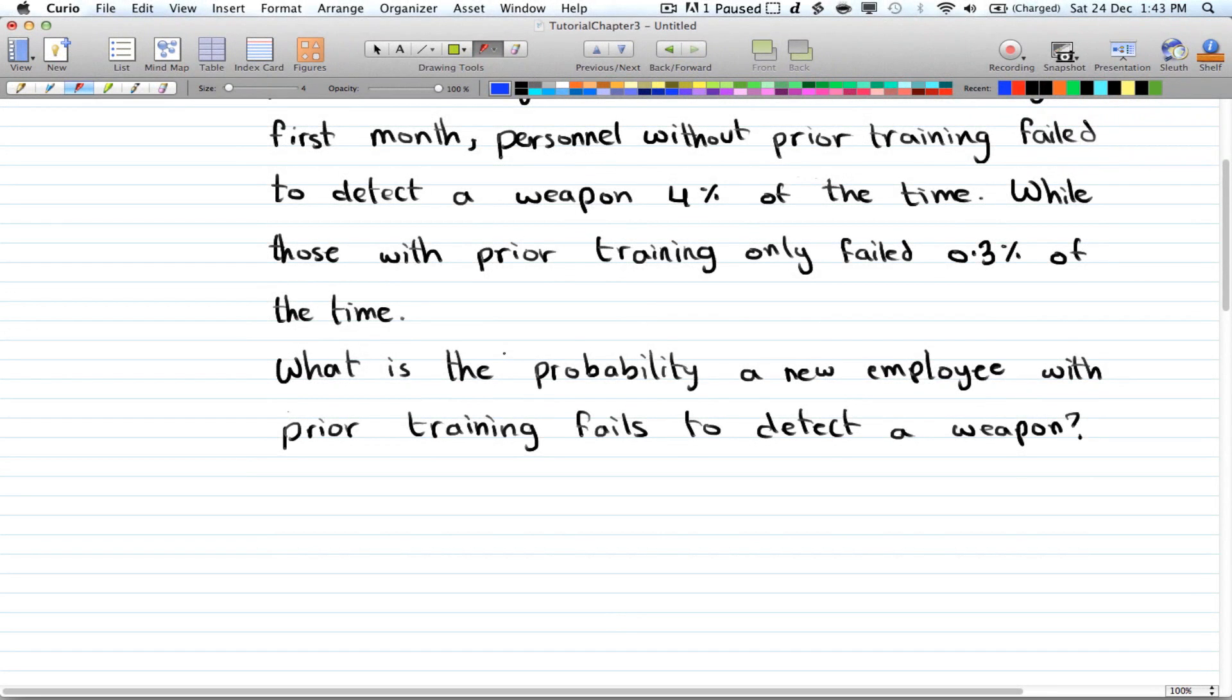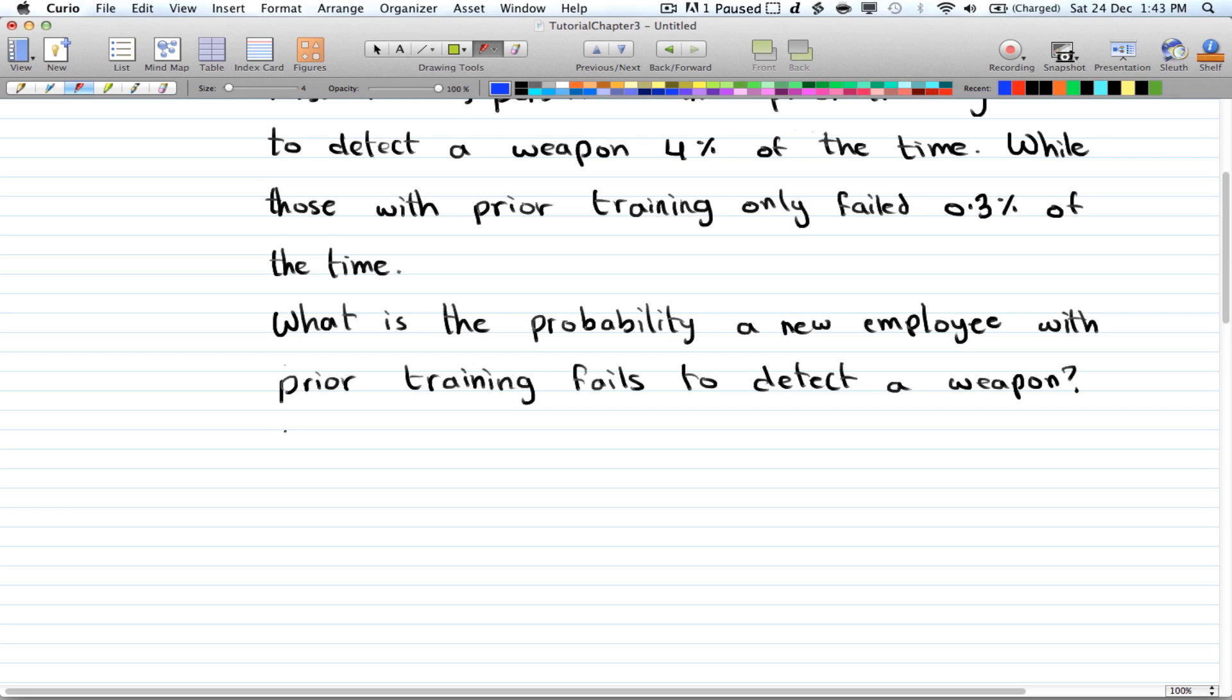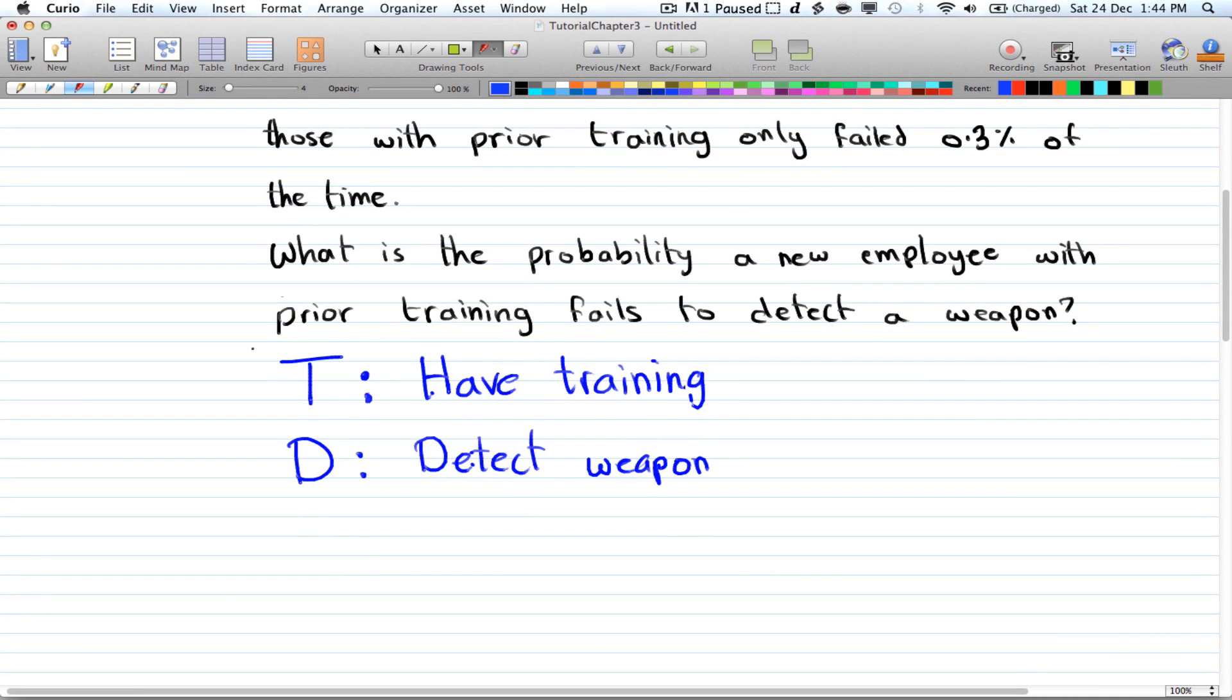So first of all, you have to label your event. And in this case I'm going to call it T for have training, and D for detect weapon. You can call these whatever you want, but I just like to use T and D for this example. Just take the first letter.